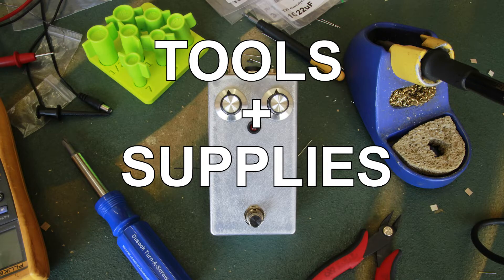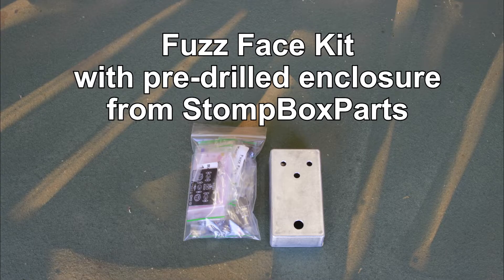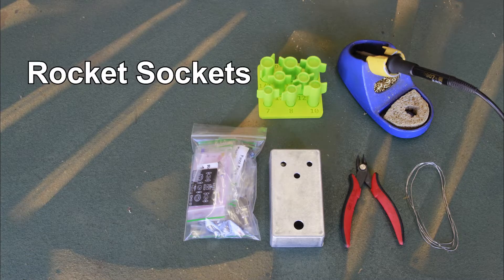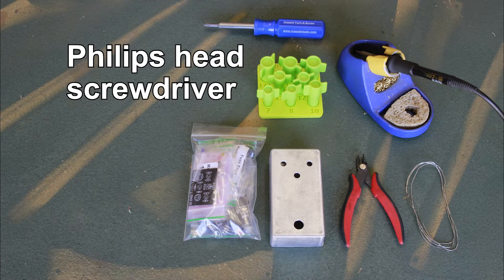Tools and supplies used in this video: a fuzz face kit with pre-drilled enclosure from stomp box parts, a soldering iron, solder, side cutters, rocket sockets or comparable wrenches or nut drivers, and a Phillips head screwdriver.